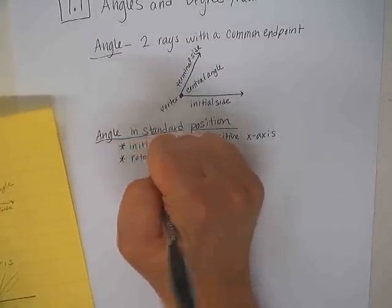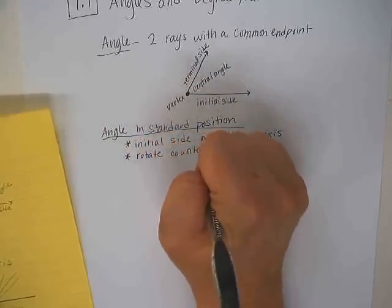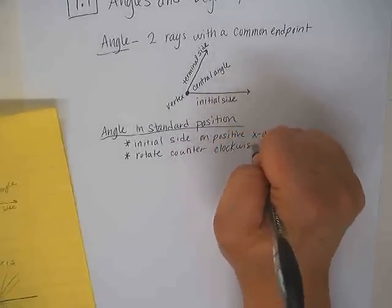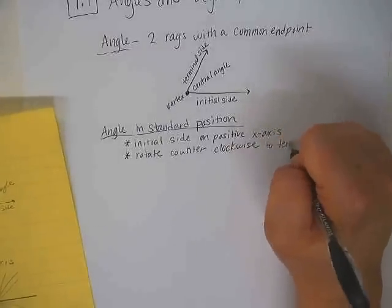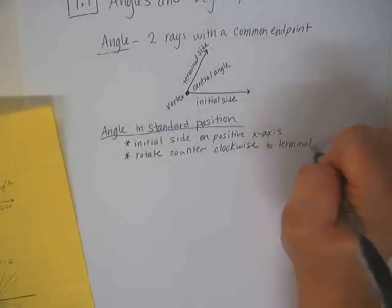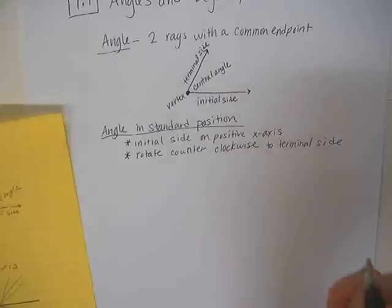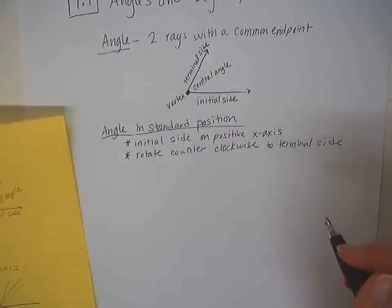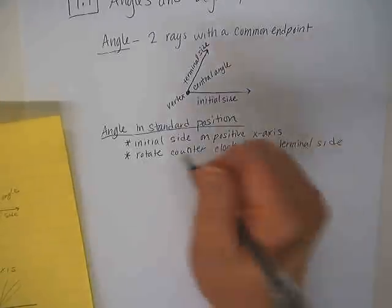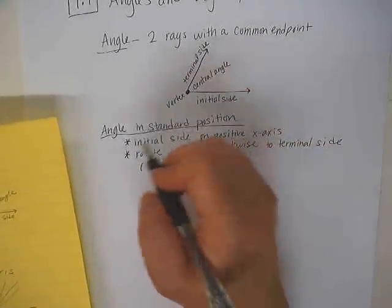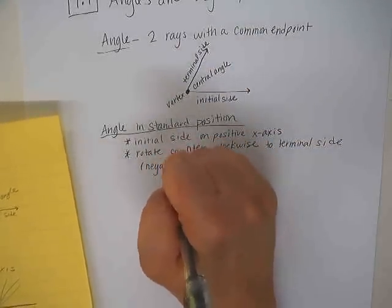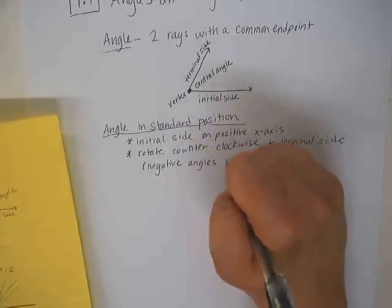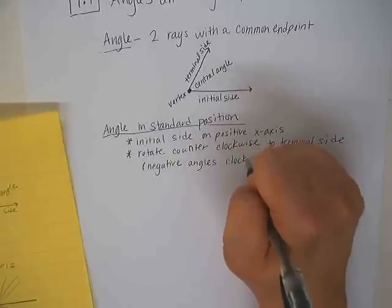From the initial side, we rotate counterclockwise to the terminal side — that's if the angle is positive. If your angle is negative, we rotate clockwise. Negative angles rotate clockwise.